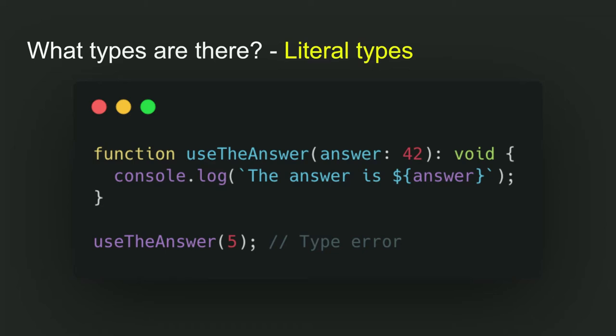So here down at the bottom, use the answer 5 will actually give you a compile time type error which can be used to, especially with the union types I will talk about in a short second, improve your type safety in your program to abstract the domain types.